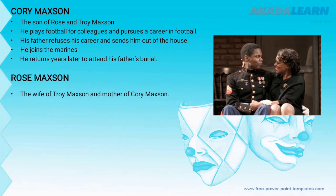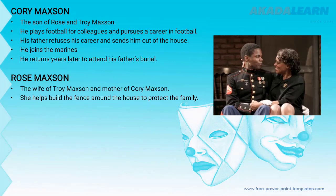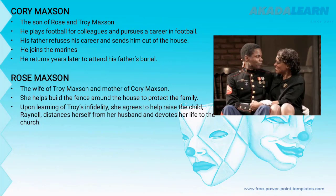We also have Rose Maxson, the wife of Troy Maxson and the mother of Cory Maxson. She helps build the fences around the house to protect the family. Upon learning of Troy's infidelity, she agrees to help raise the child Raynell, distances herself from her husband, and devotes her life to the church.